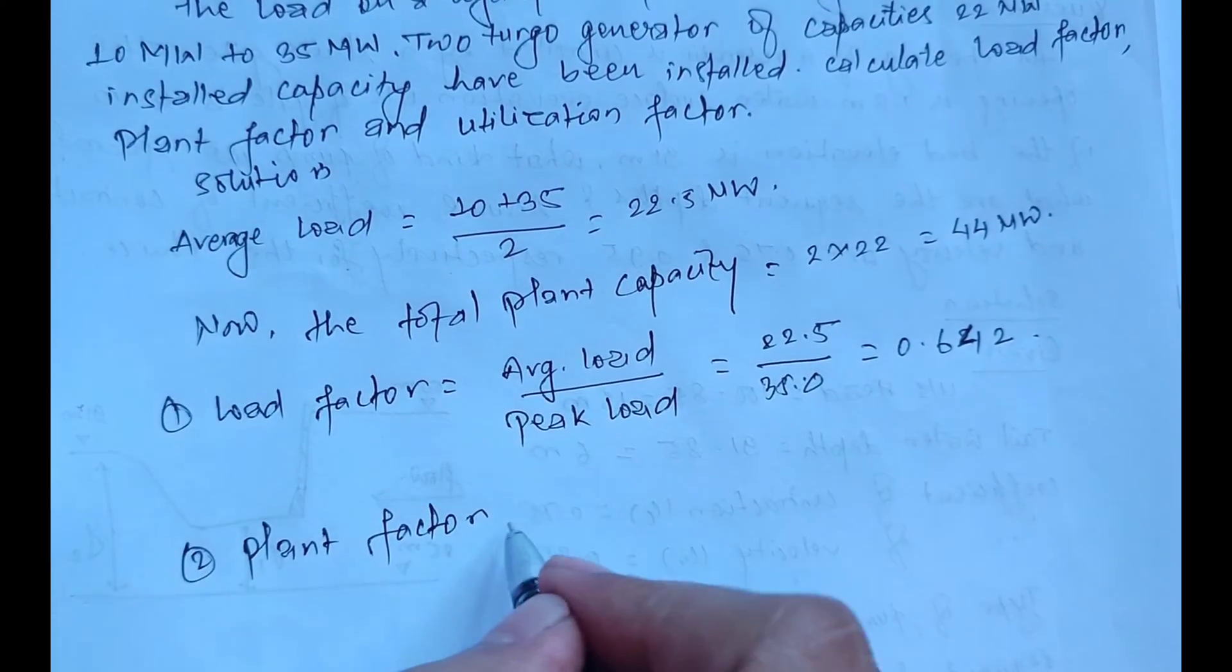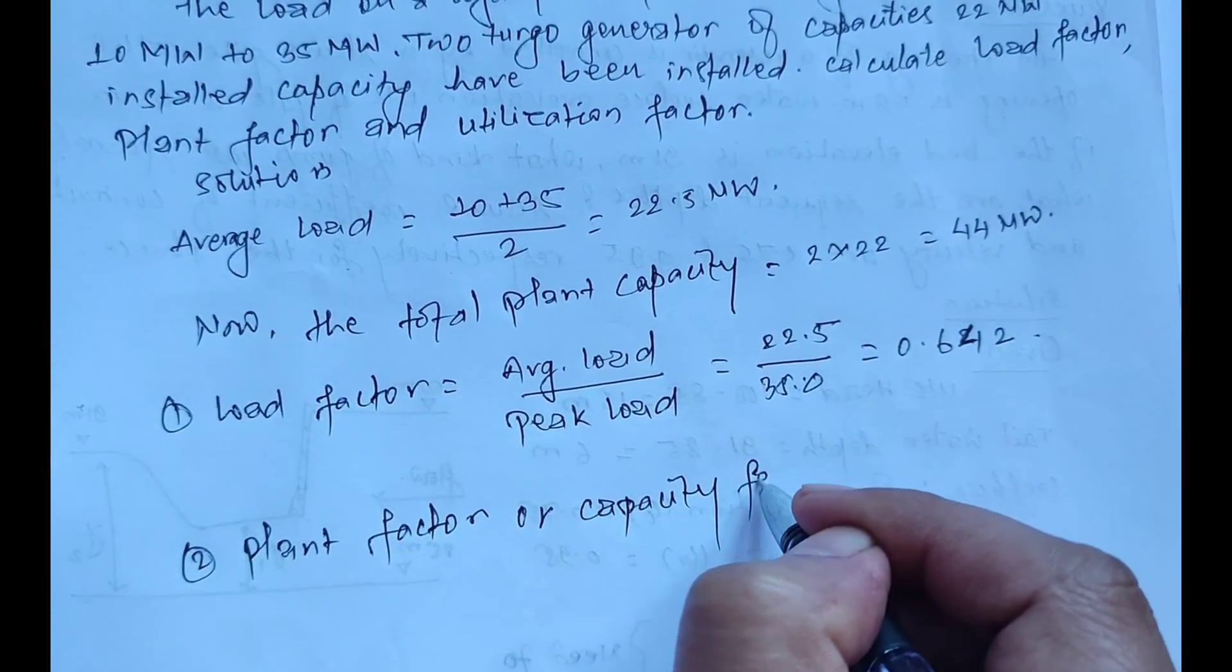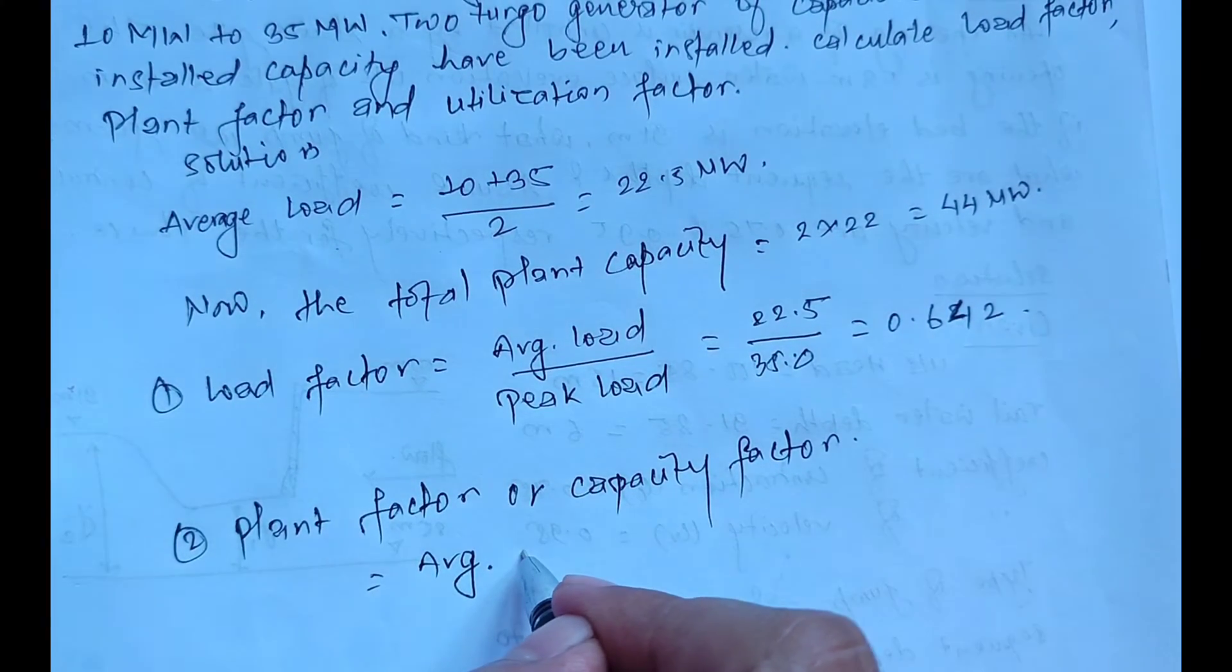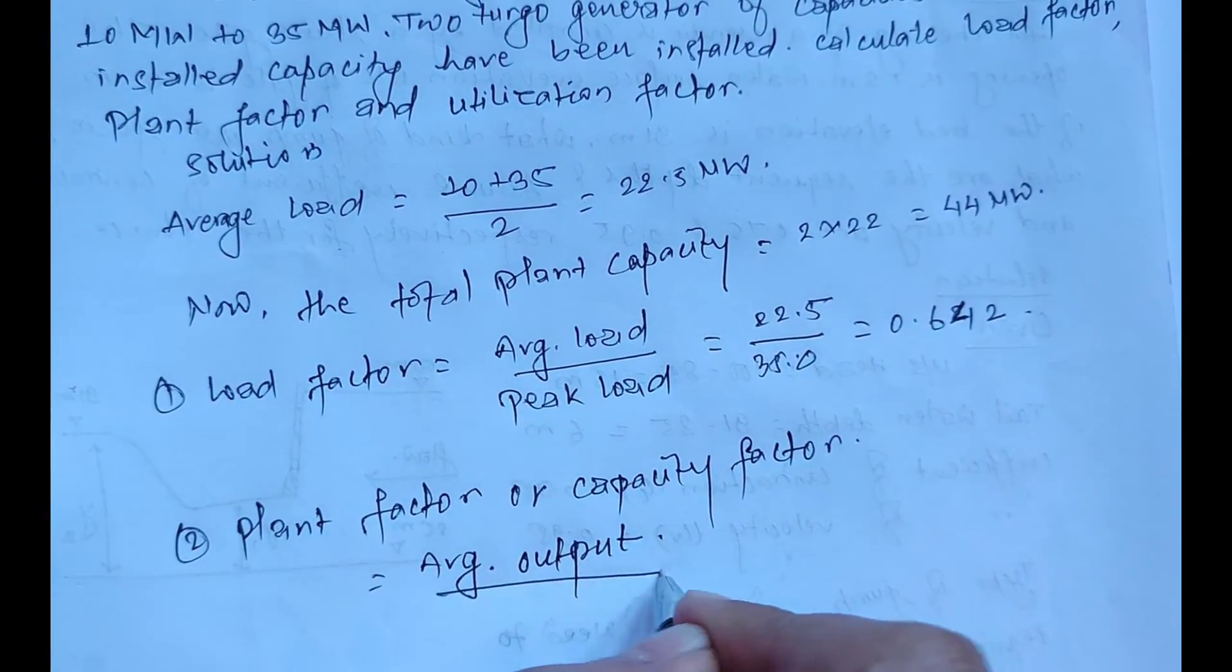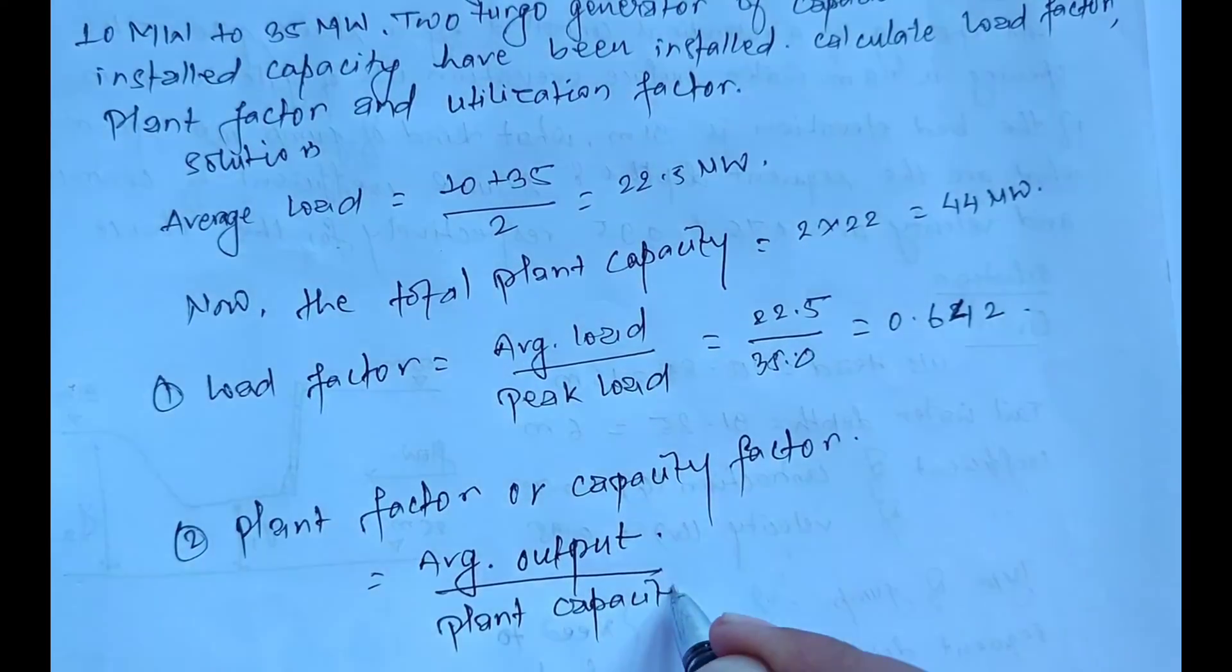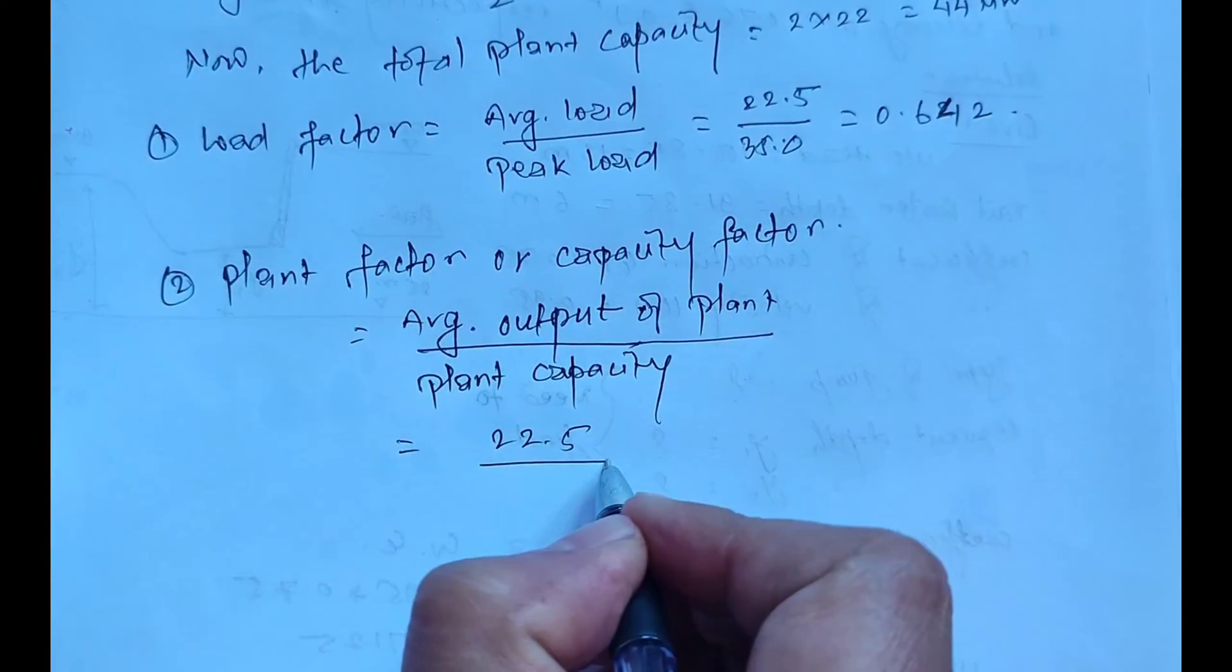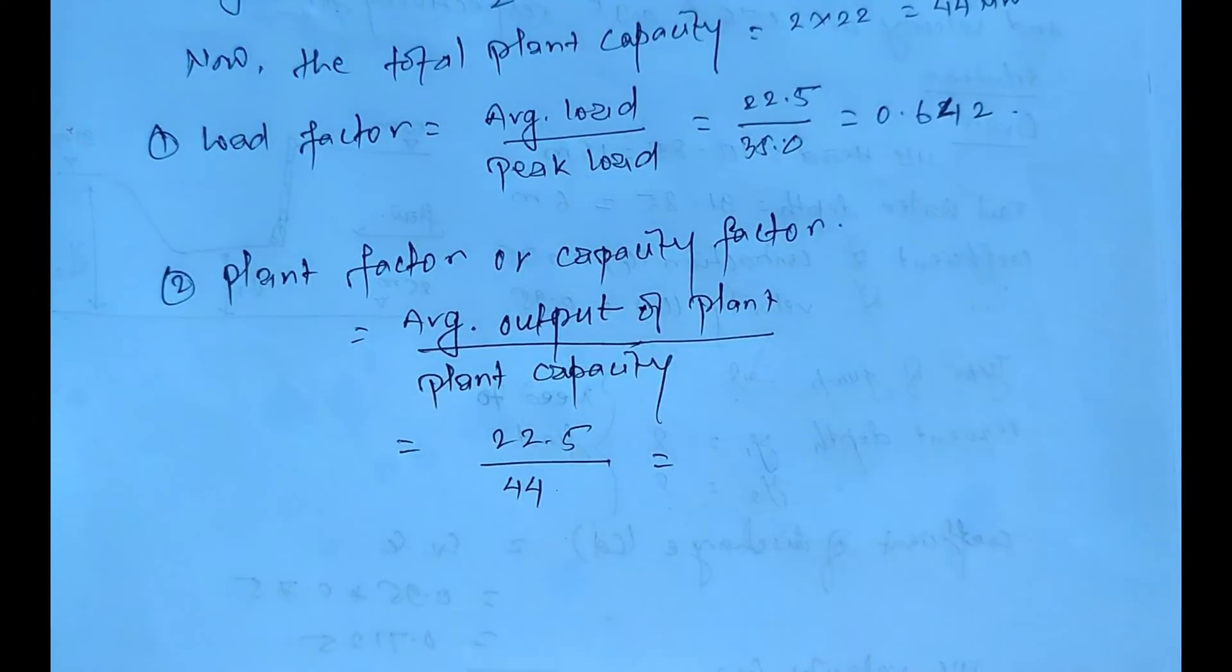plant factor. Plant factor is also called capacity factor. Capacity factor equals average output of plant divided by plant capacity. The average output of plant is 22.5 divided by the plant total capacity of 44 megawatts, which equals 22.5 divided by 44, which is about 0.511.